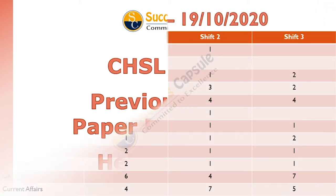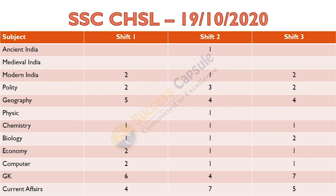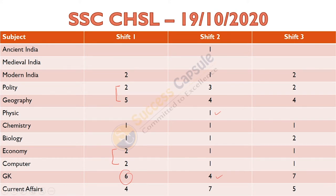Let's start the discussion. First of all, we will see how many questions are in this topic in this phase. Quality aur Geography se aapko lagatar 3 shifts mein questions pooche gaye hain. Physics se ek, Chemistry se bhi single single questions hain, Bio mein bhi, Economy aur Computer se bhi sab mein pooche gaye hain. General Knowledge part mein pehli shift mein 6 questions, second mein 4 aur third mein 7 questions hain, aur Current Affairs mein 4, 7 aur 5 questions hain.